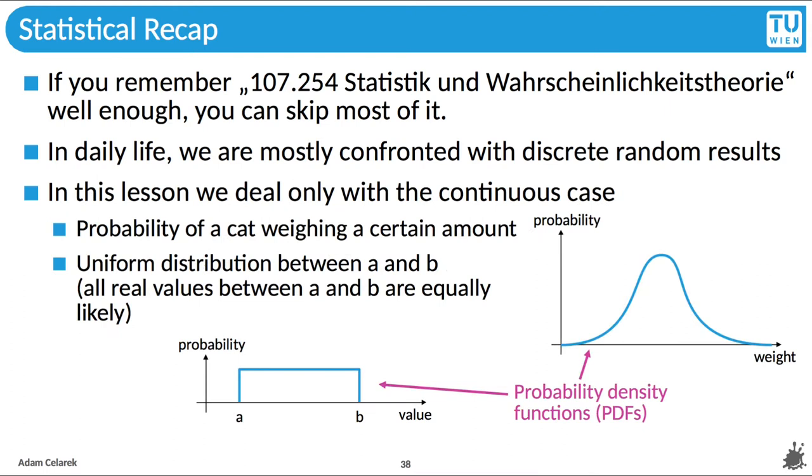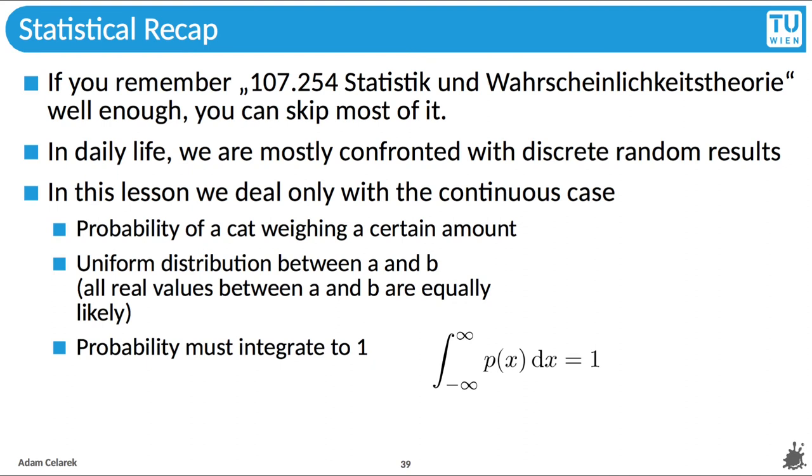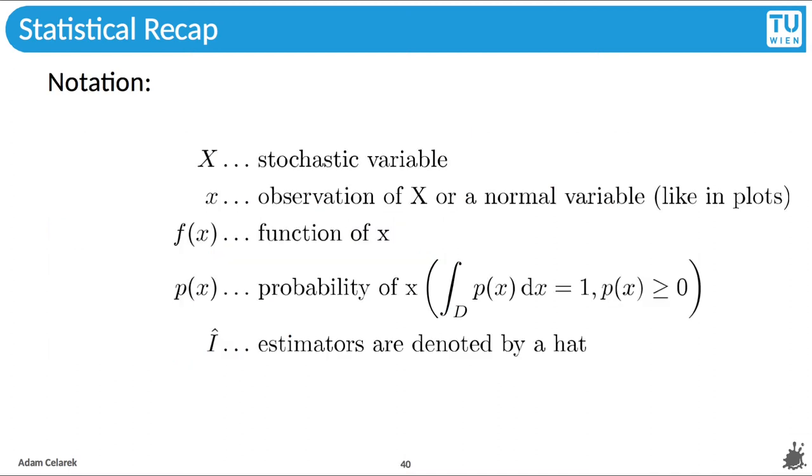Well, in Monte Carlo integration, we deal mostly with continuous statistics. In this lesson, we will only use continuous. A real-life example would be the weight distribution of a cat, described by the probability density function, in short, PDF. The cat's weights probably follow a normal distribution with certain parameters. Another example would be a uniform distribution between a and b. And similarly to the discrete case, the PDF p integrates to 1. We'll also have to introduce some notation.